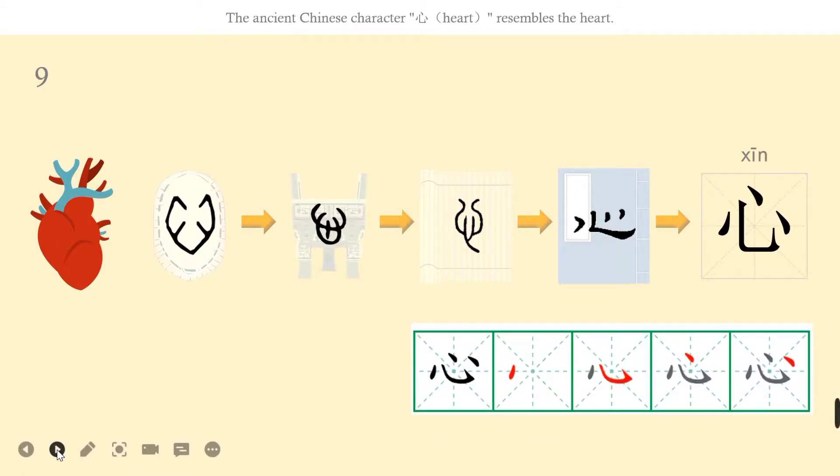Let's learn how to write xīn. The first stroke: diǎn. The second stroke: xiégōu. The third stroke: diǎn. And the fourth stroke: diǎn.